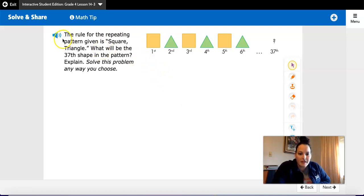The rule for the repeating pattern given is square triangle. What will be the 37th shape in the pattern? Explain. Solve this problem any way you choose.